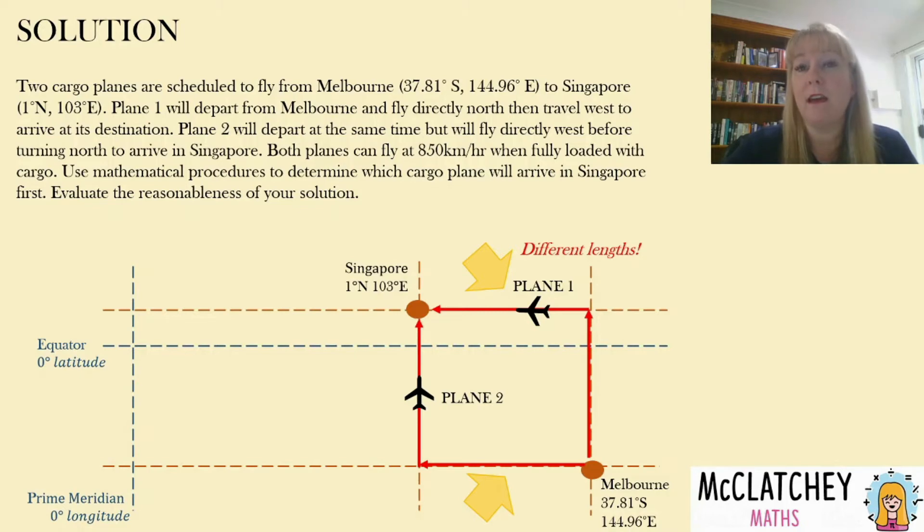However Melbourne's a lot further south, 37 degrees south, and therefore as the further you get south towards your poles or north towards your poles those small circles get smaller. So in fact that journey that it's taking from Melbourne to Singapore on plane two is actually going to be the shorter journey.